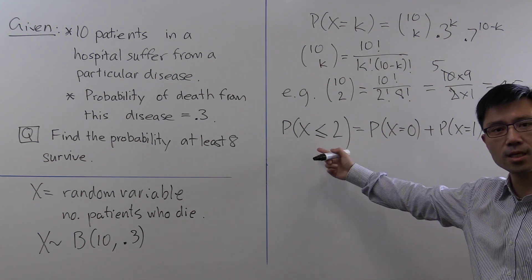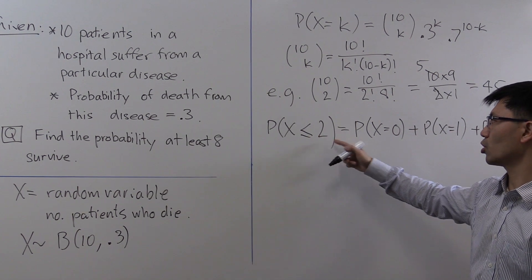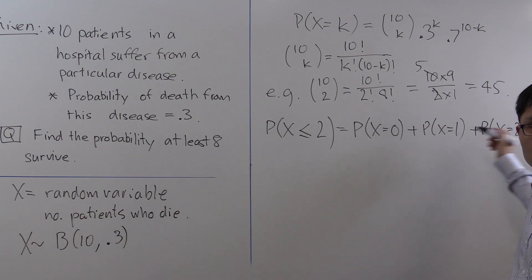So the probability that we're after, P(X ≤ 2), is given by the sum of these three probabilities.